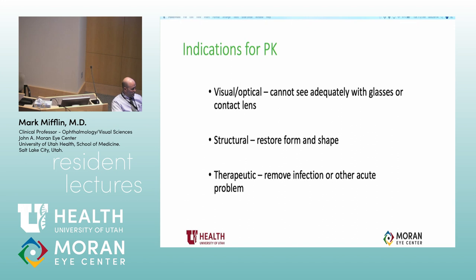Why would we do a PK — and this could also apply to some other cornea transplants, particularly anterior lamellar keratoplasty? The most obvious reason is that the patient can't see and there's something in the way — a visual or optical reason. It could be an actual scar blocking vision, or a deficit in curvature of the cornea that can't be overcome by a contact lens, such as severe thinning or severe irregular astigmatism.